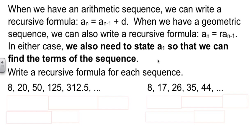When we're looking at an arithmetic sequence, we can write ourselves a recursive formula: aₙ = aₙ₋₁ + d. If it's geometric, we're multiplying by r. In either case, we also need to state a₁ so that we can then find the terms of the sequence. That's part of the deal when it is arithmetic or when it is geometric.